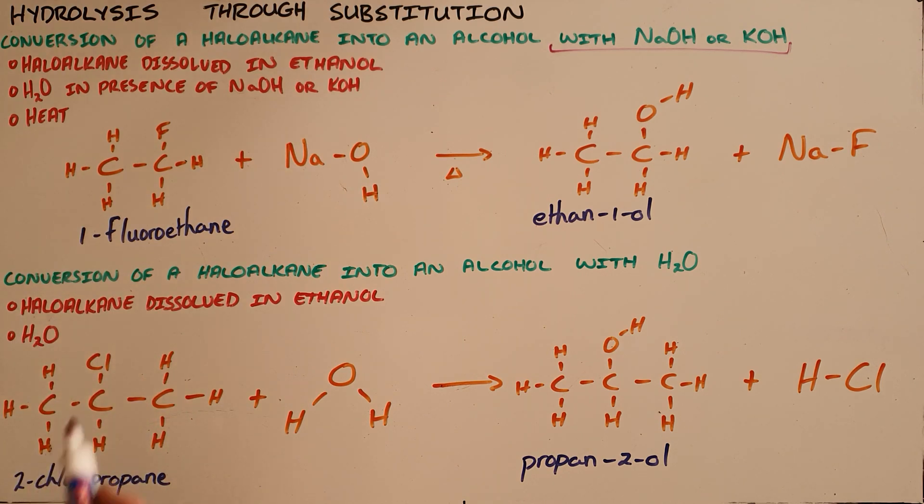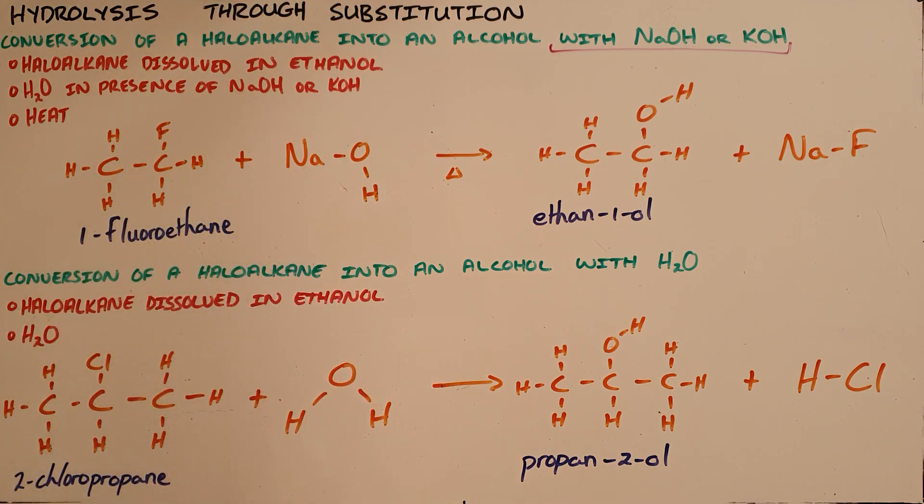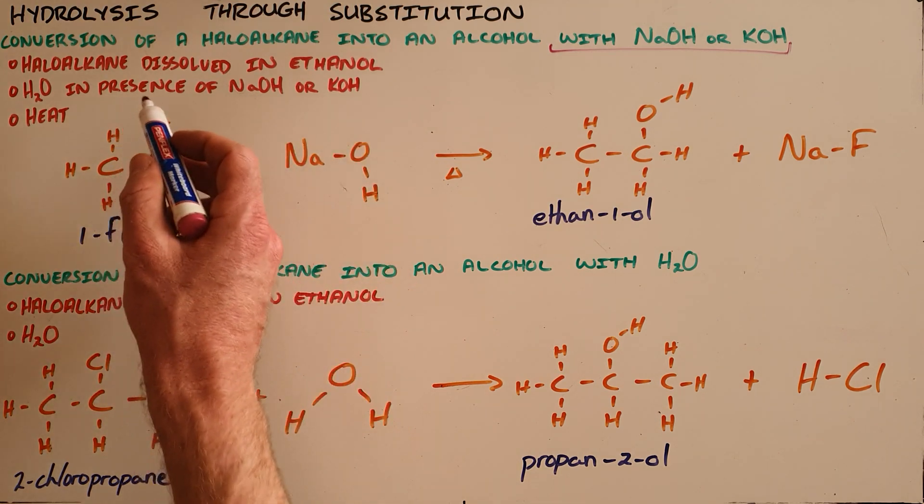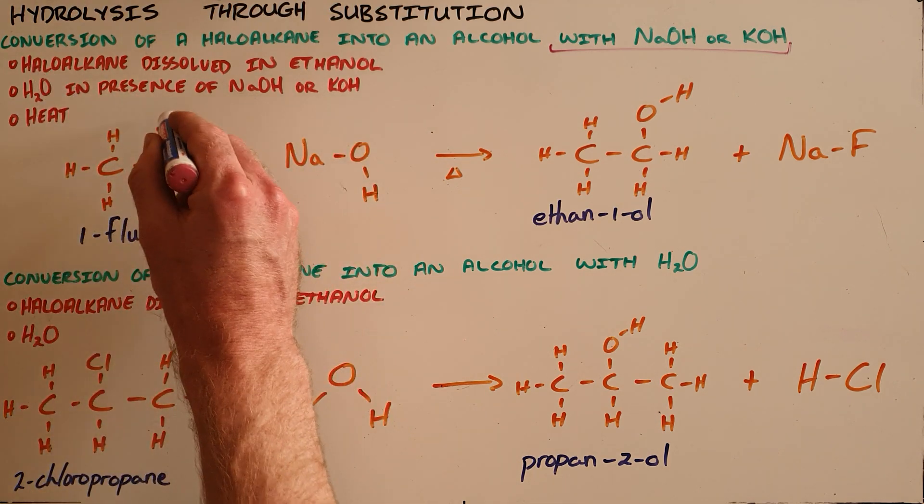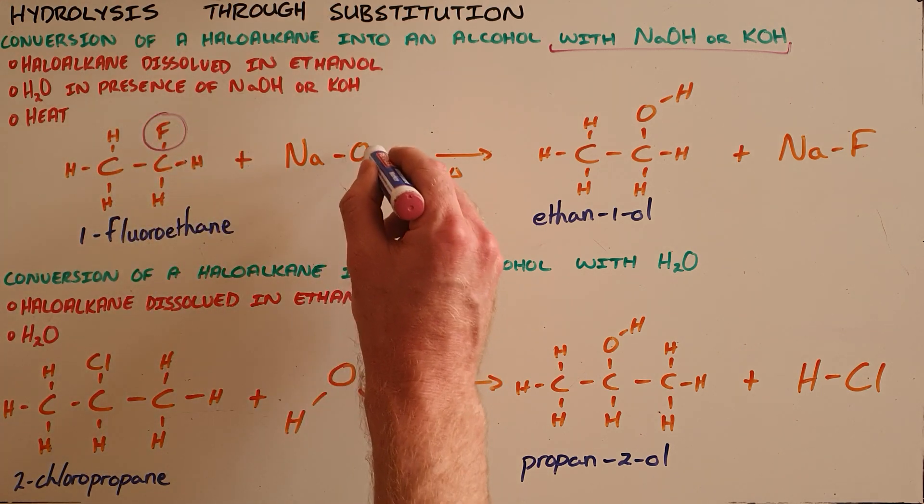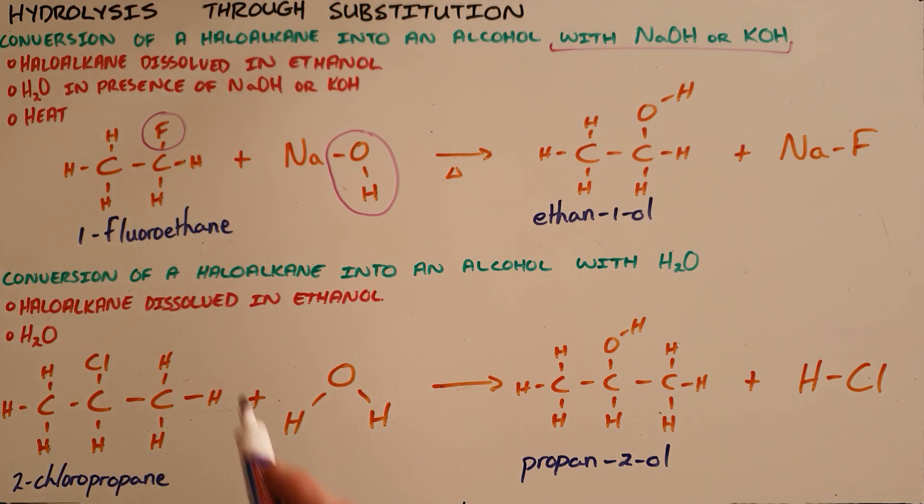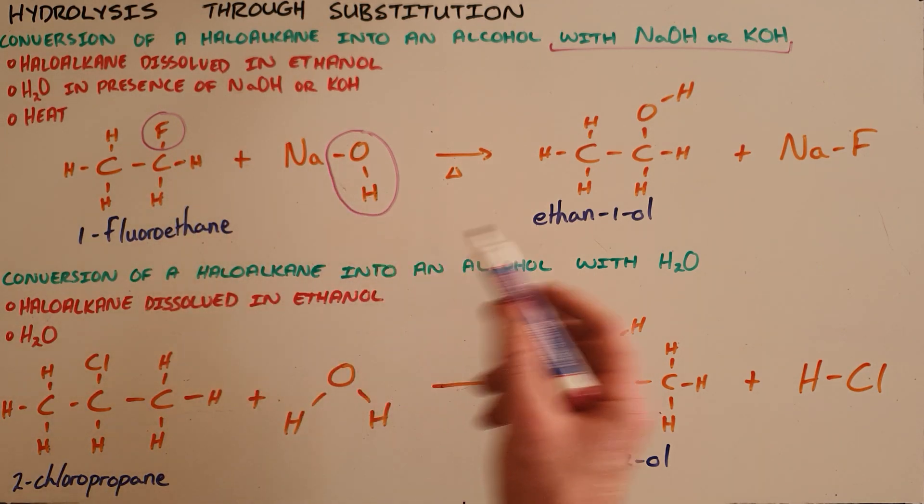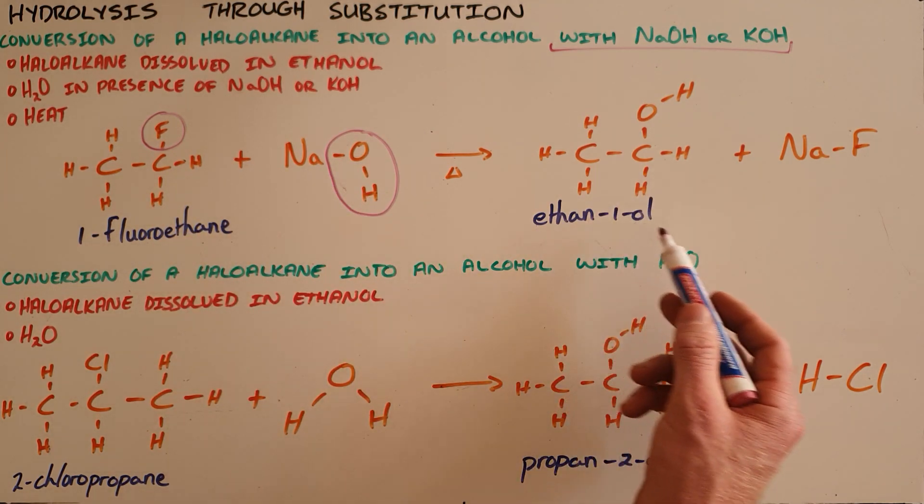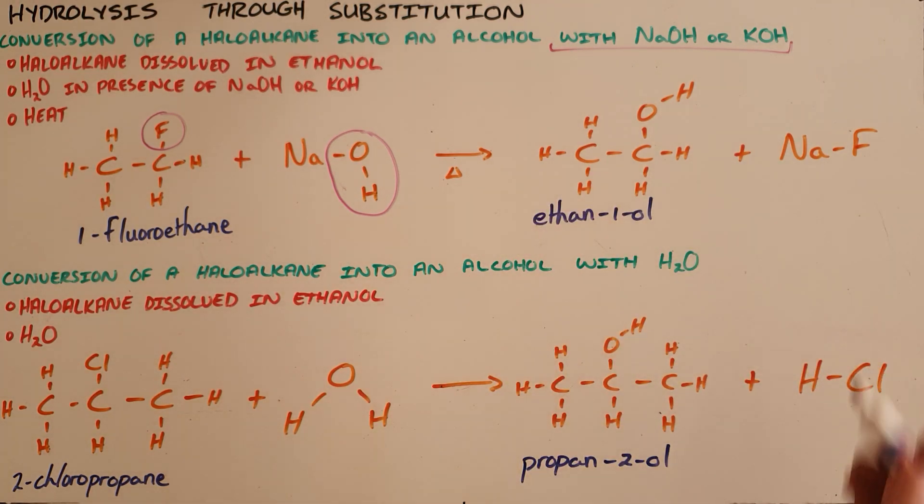In this example, we have 1-fluoroethane that reacts with sodium hydroxide. In the correct conditions, these three conditions here, the fluorine atom is substituted with the hydroxide, the hydroxyl group, to form ethanol-1-ol, which is our alcohol, and then the remaining sodium fluoride.